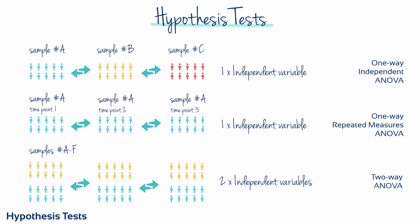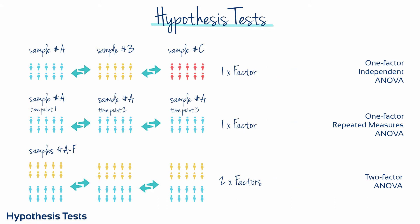Another name for the independent variable when talking about ANOVA is 'factor,' so we can also legitimately refer to these tests as the one-factor independent ANOVA, the one-factor repeated measures ANOVA, and the two-factor ANOVA.